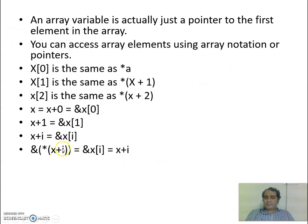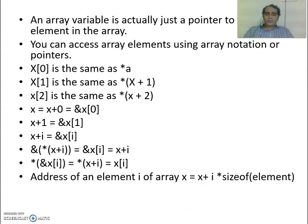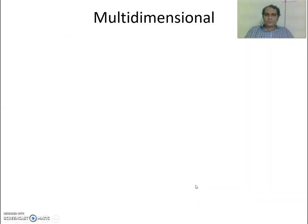Value at X plus i. Address of value at X plus i, nothing but address of X[i], that is nothing but X plus i. So all these three are equivalent. How do I find address of an element? Address of element i of array X is X plus i into size of element. Just now I was trying to explain you the same thing.